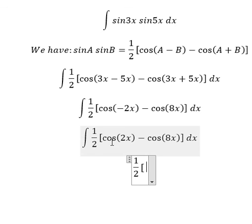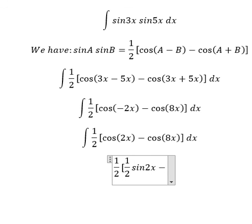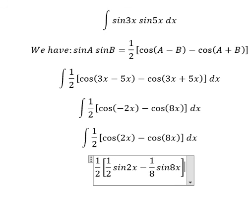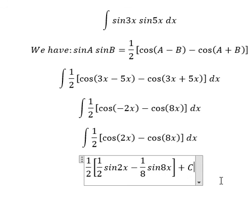The integration of cosine 2x we have 1 over 2 sine 2x. The integration of cosine 8x we have 1 over 8 sine 8x, and we put C in here.